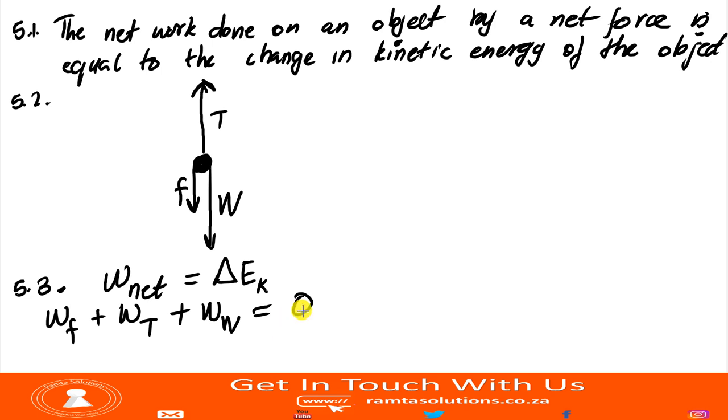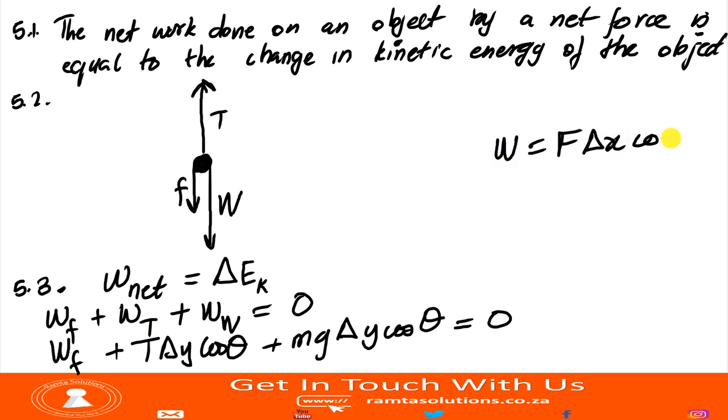Now what is our network? The object is going up. So tension is in the same direction as the displacement. Let's say work done by friction plus work done by tension plus work done by weight is equal to zero. Why am I saying zero? Because it is moving at a constant velocity. The object is being lifted at a constant velocity. So changing kinetic energy is zero.